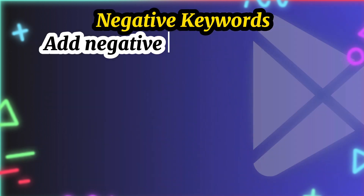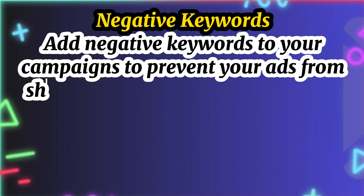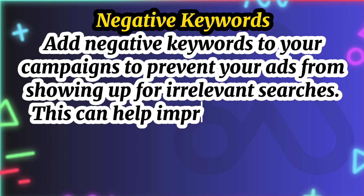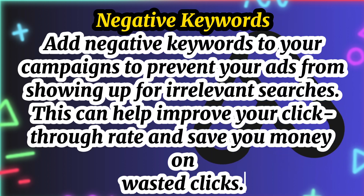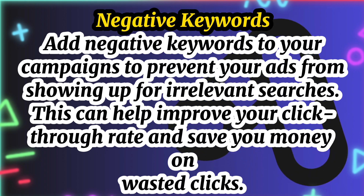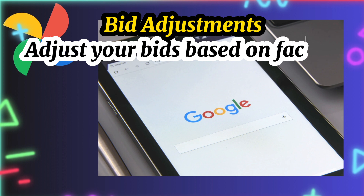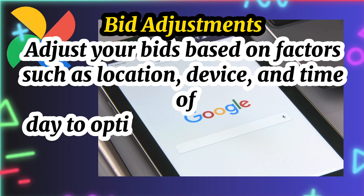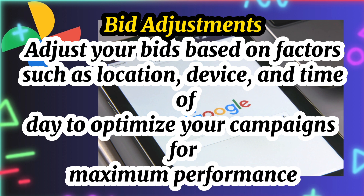Negative keywords: add negative keywords to your campaigns to prevent your ads from showing up for irrelevant searches. This can help improve your click-through rate and save you money on wasted clicks. Bid adjustments: adjust your bids based on factors such as location, device, and time of day to optimize your campaigns for maximum performance.